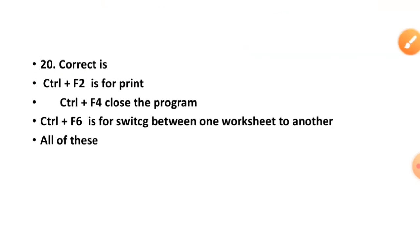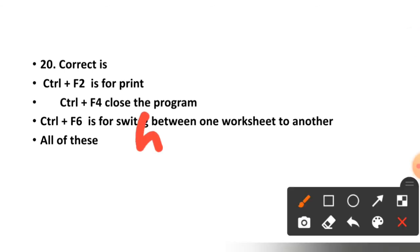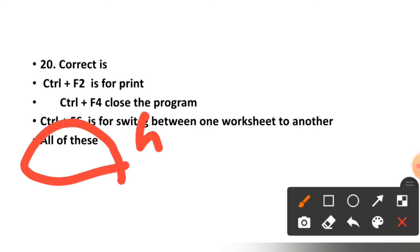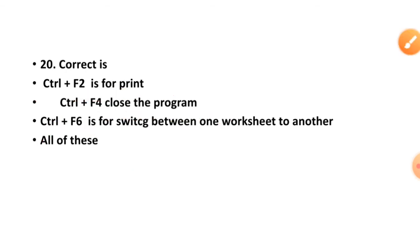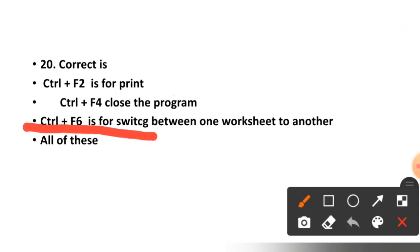Question number twenty: Control plus F2 is for print, Control plus F4 closes the program, Control plus F6 is for switching between one worksheet to another. The correct option is D, all of the above. Control plus F2 for print, Control plus F4 for close the program, and Control plus F6 for switching between worksheets.